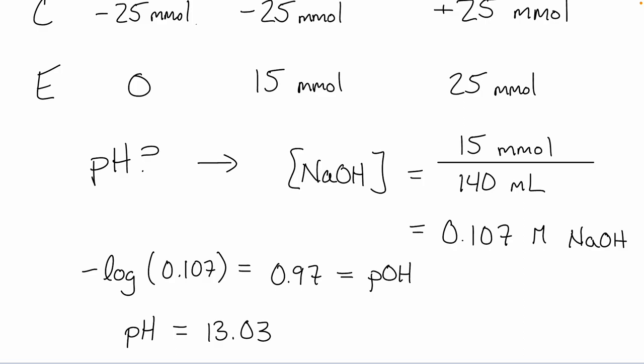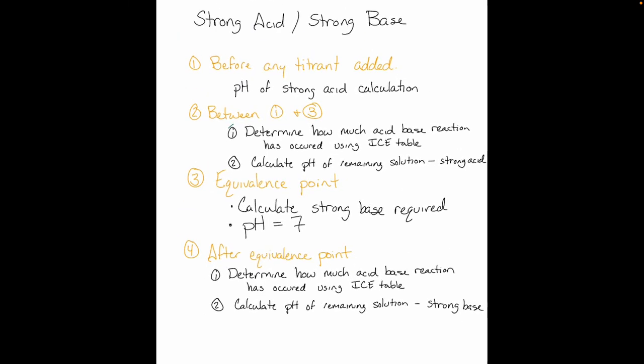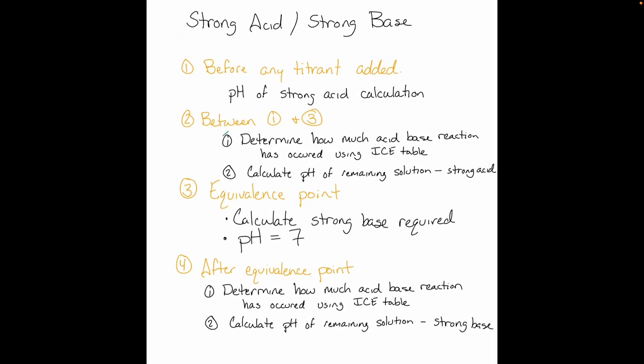So we have this titration and depending on where we are on our titration curve, we use a slightly different approach. Initially, we just have a strong acid solution and calculate its pH. At the equivalence point, exactly as much base has been added as we had starting acid — for a strong acid, strong base titration, that pH is always seven. If we're in between or past the equivalence point, we figure out how much reaction occurred and then calculate the pH of that leftover solution.